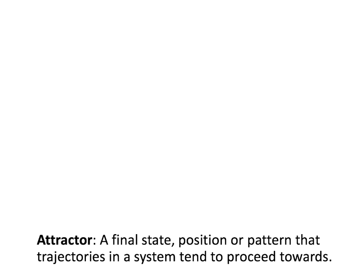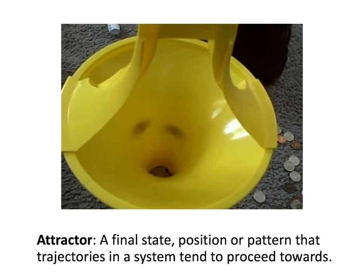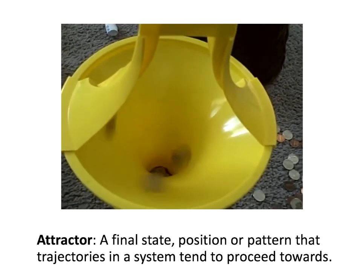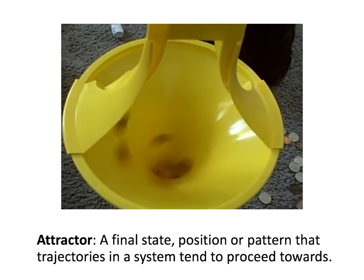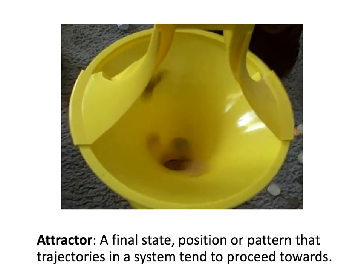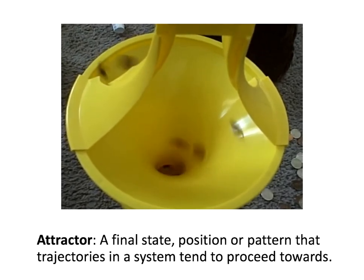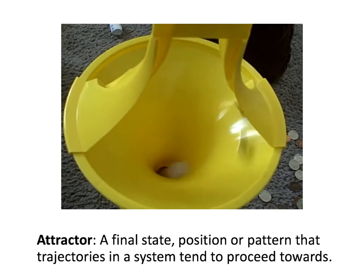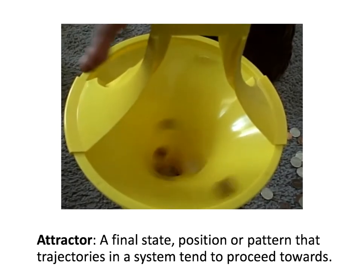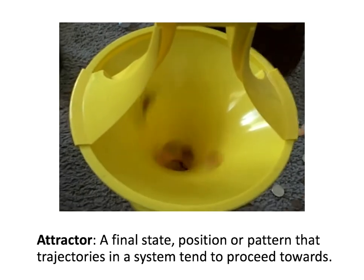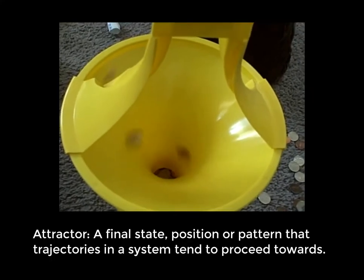Introducing this idea of attractors, the first thing that's important is to understand that we're talking not just about trajectories, but trajectories in a particular system. A system, for the moment, we can think of as the context in which a particular trajectory occurs. Take this example of coins rolling around in this plastic funnel — here the system would be the coins, the funnel, and the influence of gravity and so forth.